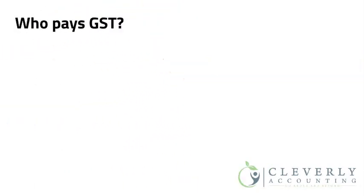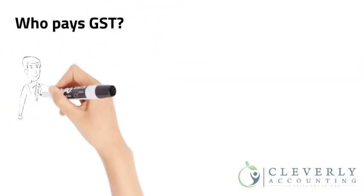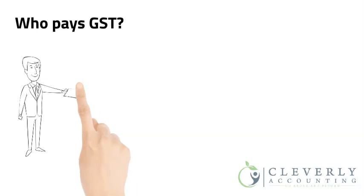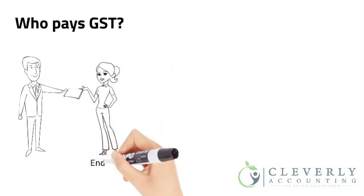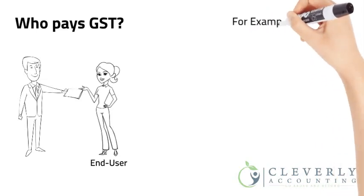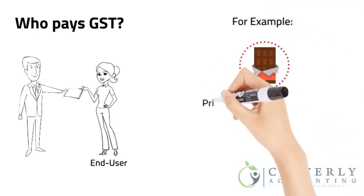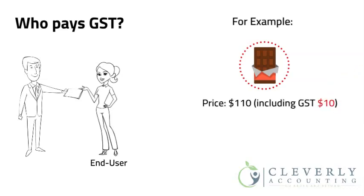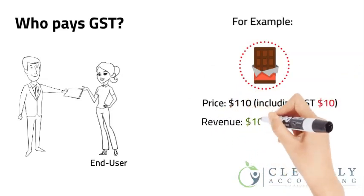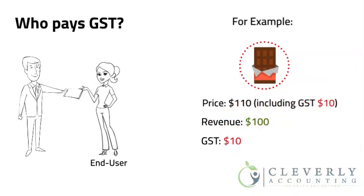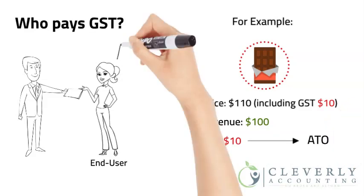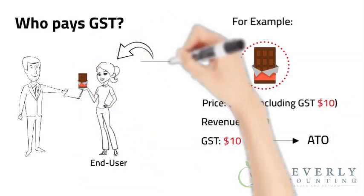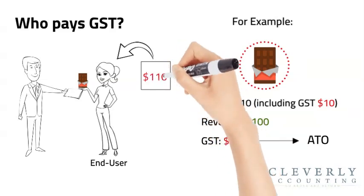Who pays GST? The end-user in the commercial chain of transactions is the party that ultimately incurs the tax as a cost. For example, if you sell a product for a price of $110 including GST of $10, you generate a revenue of $100 and the $10 GST needs to be remitted to the ATO. So effectively, it is the final consumers that pay GST.